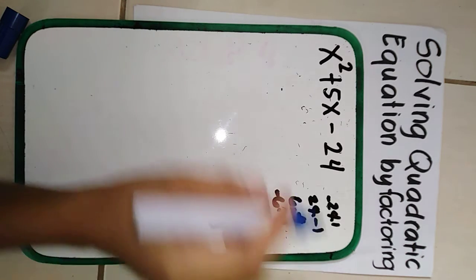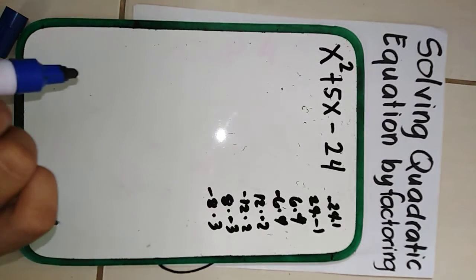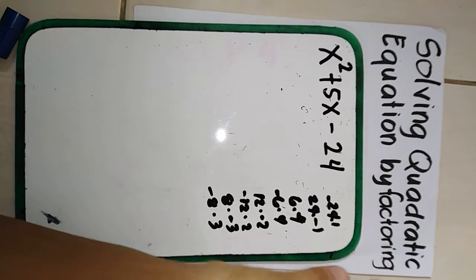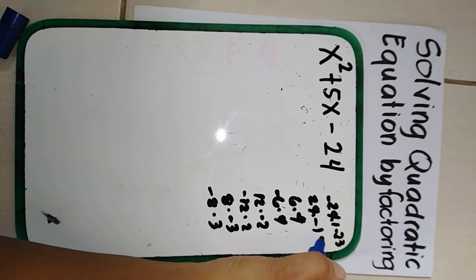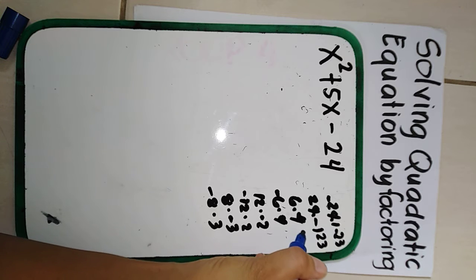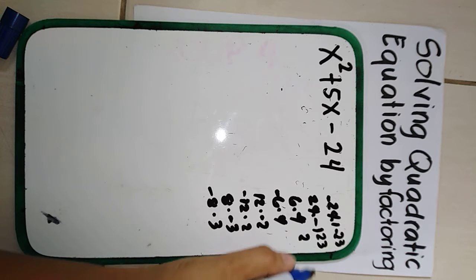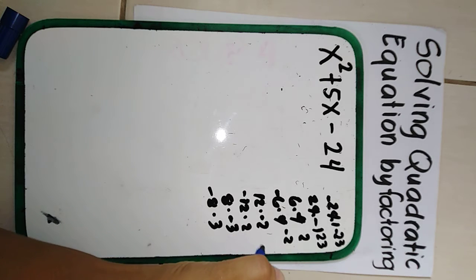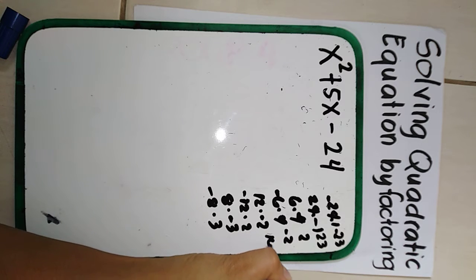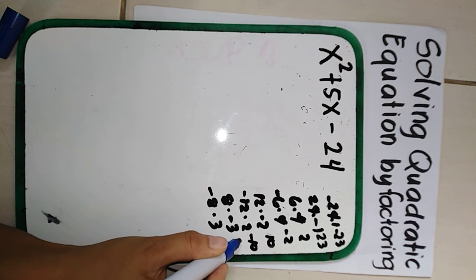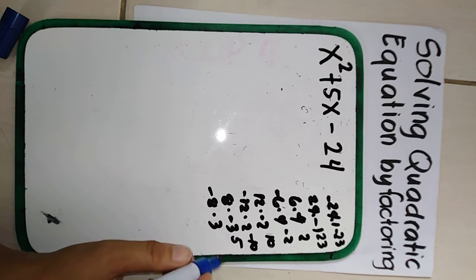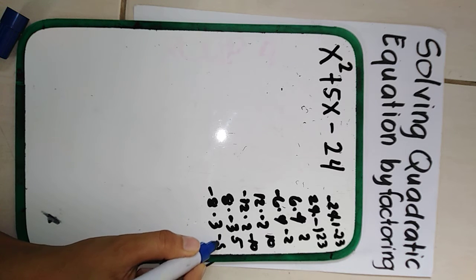Let's find their sums to see which equals 5. Negative 24 plus 1 is negative 23. 24 plus negative 1 is positive 23. 6 plus negative 4 is 2. Negative 6 plus 4 is negative 2. 12 plus negative 2 is 10. Negative 12 plus 2 is negative 10. 8 plus negative 3 is positive 5. Negative 8 plus 3 is negative 5.